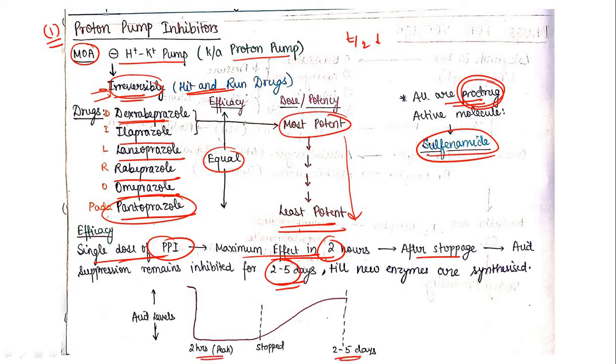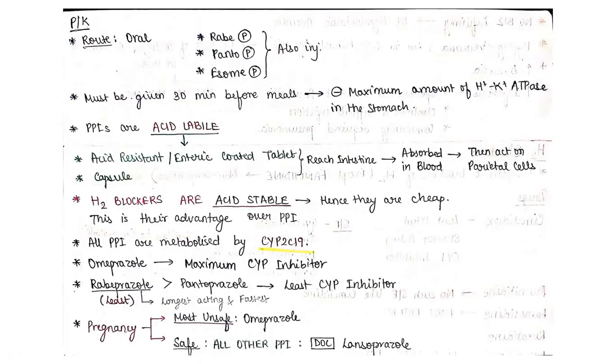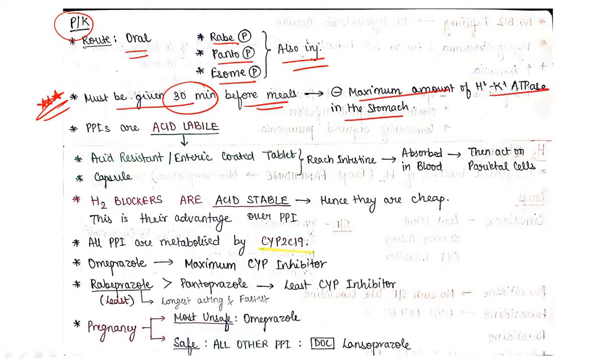Now what are the pharmacokinetics? It is given by oral route. Rabeprazole, pantoprazole, and esomeprazole can be given through injection. It must be given 30 minutes before meal. This is very important - it must be given 30 minutes before meal so it will inhibit maximum amount of H+ K+ ATPase in the stomach. This is a very important clinical point. PPIs are also acid labile, so acid-resistant or enteric-coated tablets have been developed or it may be given in the form of capsule because of the acid lability.